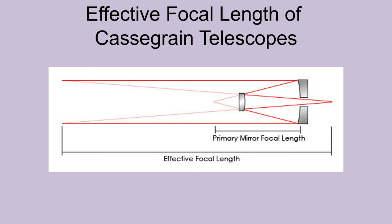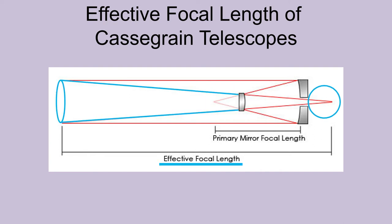In a Maksutov-Cassegrain scope, the only difference is that the convex secondary is a convex aluminized spot. A 7-inch MAK would have a primary mirror focal length of about 21 inches — three times its diameter — focusing light to a point 21 inches in front of the mirror. The spot secondary is convex in shape and also reflects light to a sharper angle. Tracing this light cone back, you get a focal length boost factor of around five times, making the effective focal length of the MAK scope 105 inches — 15 times the diameter of the primary mirror, in a telescope only about 21 inches long.